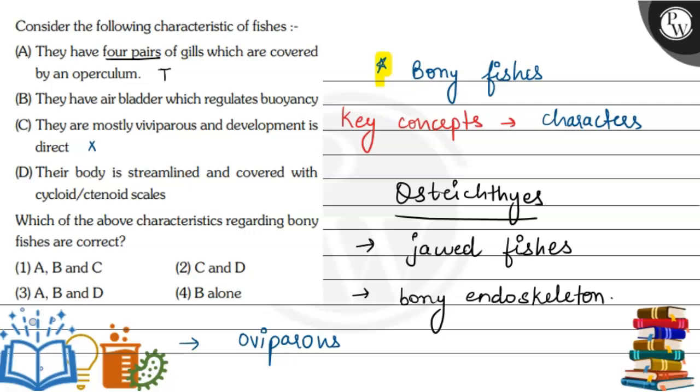Moving ahead, their body is streamlined and covered with cycloid or ctenoid scales. Yes, their skin has scales. We've seen that if this is a fish body, suppose, there are scales formed like this in it. So these scales are there. This is also a correct statement.